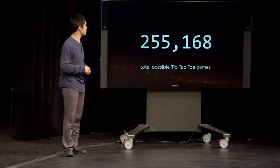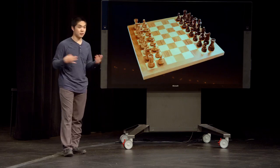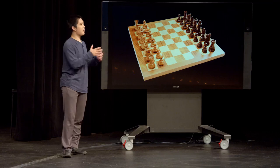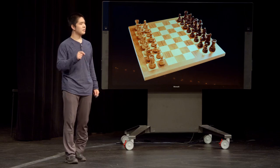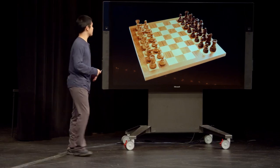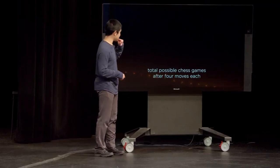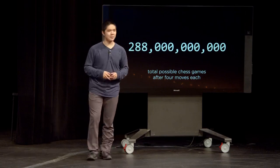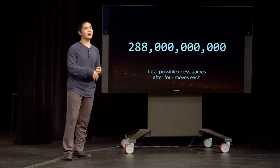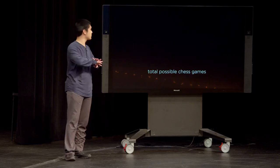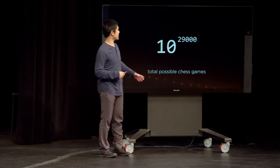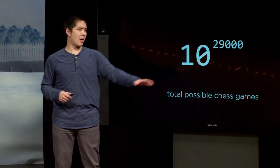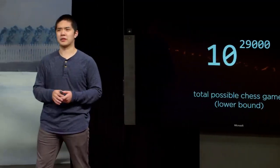But if you imagine a game like chess, known for being fairly complex — how many possible games of chess are there? It turns out that only after the first four moves, there are 288 billion possible chess games. That's only the first four moves. If you consider the entire game of chess, nobody knows the answer exactly, but people estimate 10 to the 29,000 is probably a lower bound on the number of possible chess games. That is far too many for any computer to reasonably get through in any amount of time.